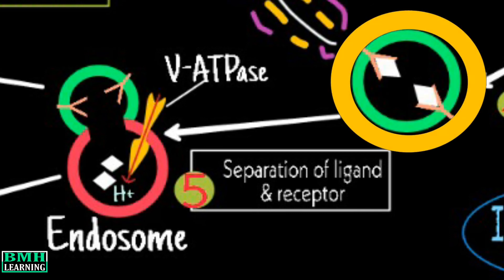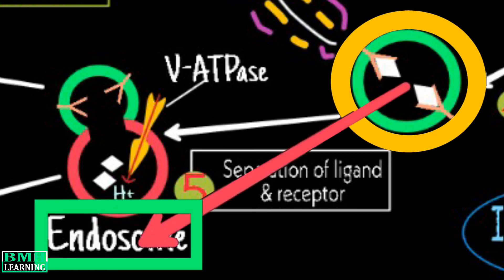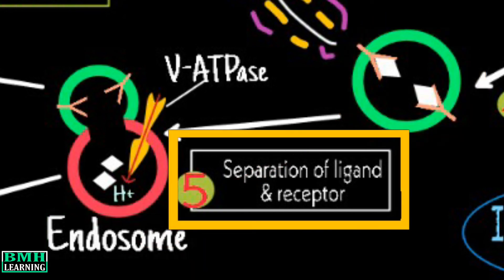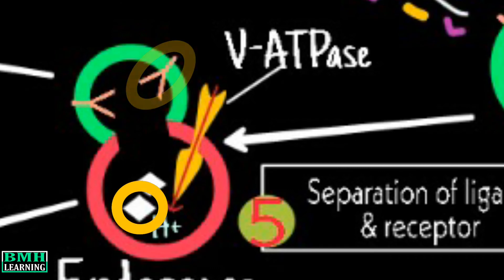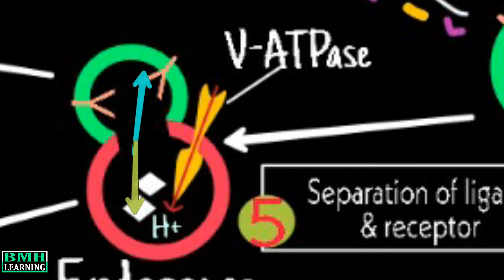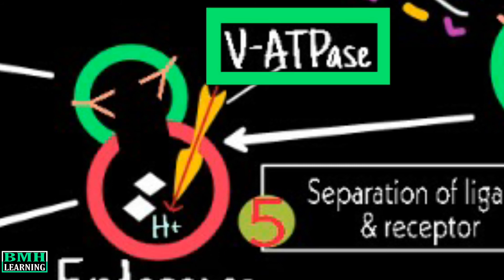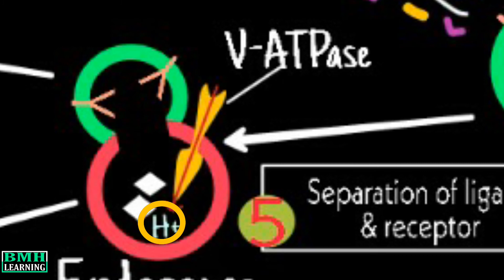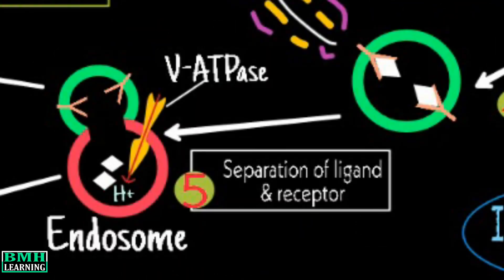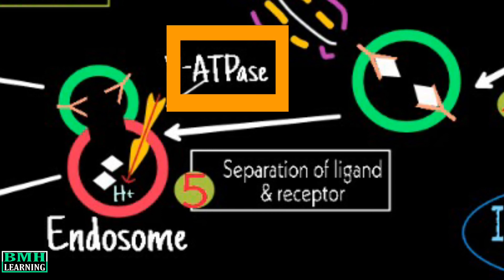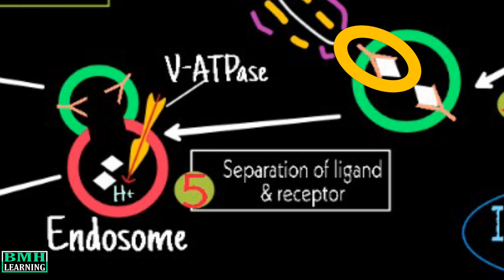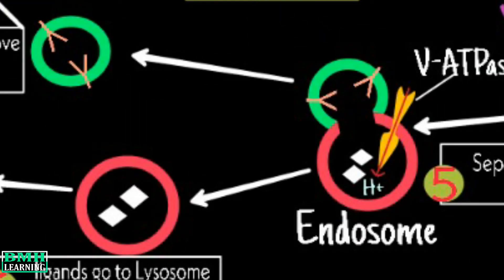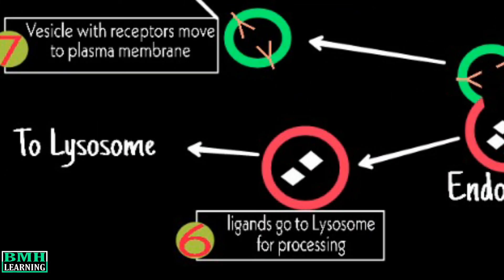Now it's time for the vesicle to fuse with the endosome, and at this point step 5 comes into play. The ligand and the receptor are separated. The pH of the endosome is slightly acidic, maintained by the continuous action of V-ATPases that pump H+ ions into the endosome. This action is not tolerated by the ligand-receptor complex, and hence they prefer to separate from each other.